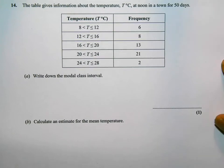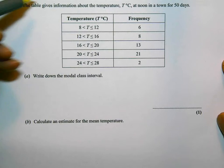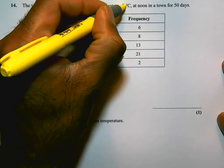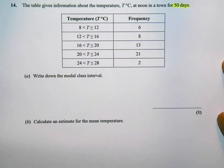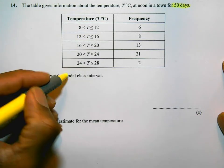Let's start from the beginning. The table shows information about the temperature, T degrees Celsius, at noon in town for 50 days. And here is the table. The question says, write down the modal class.